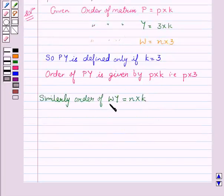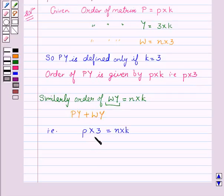As we all know, addition of matrices is also possible if they both have the same order. So to add matrix PY and WY, they are having the same order, the order of PY should be equal to the order of WY.